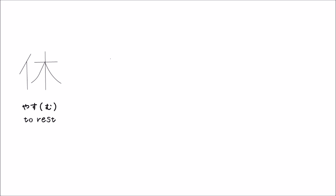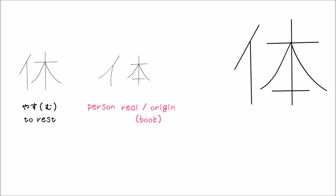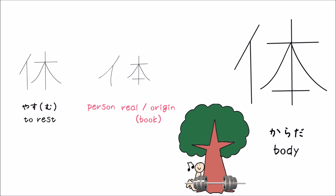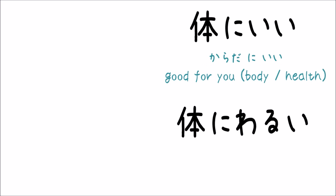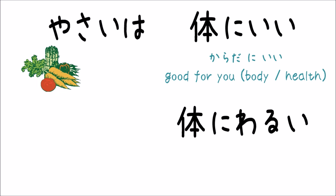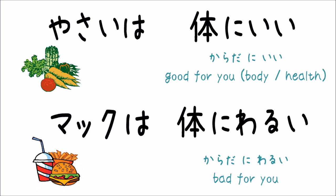Do you still remember the kanji for rest? We're going to put the kanji for book instead of tree and we get the kanji for body. Just imagine resting your body under the tree with a dumbbell on the side. The reading is karada. Karada ni ii means good for you or good for your health — you can use it about healthy food. For example, yasai wa karada ni ii means vegetables are good for you. And makku wa karada ni warui means McDonald's isn't good for you.